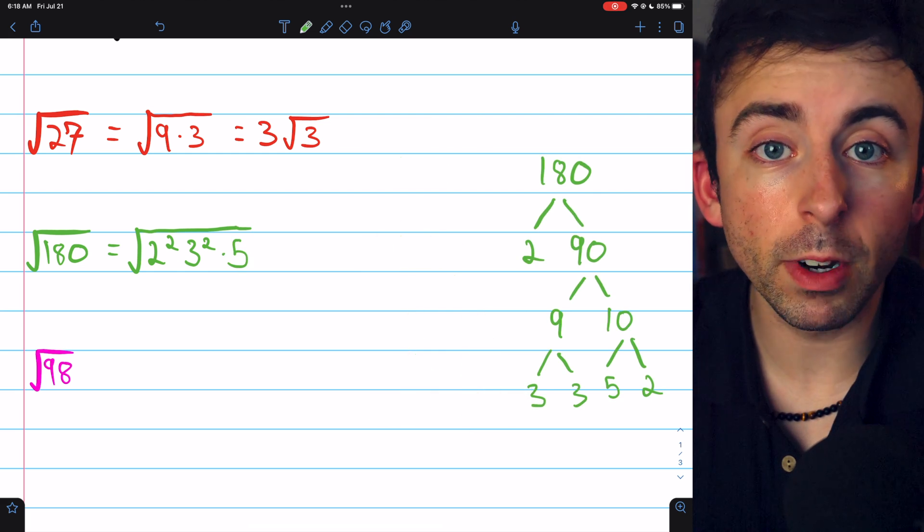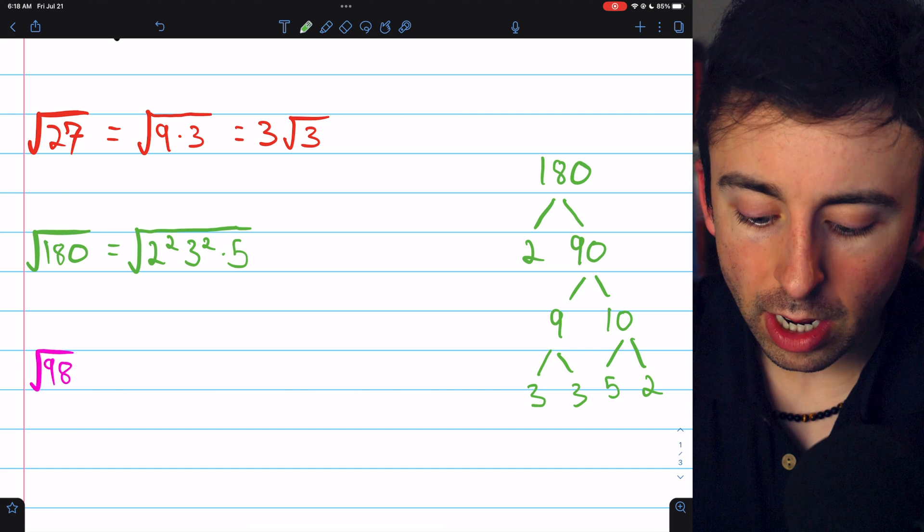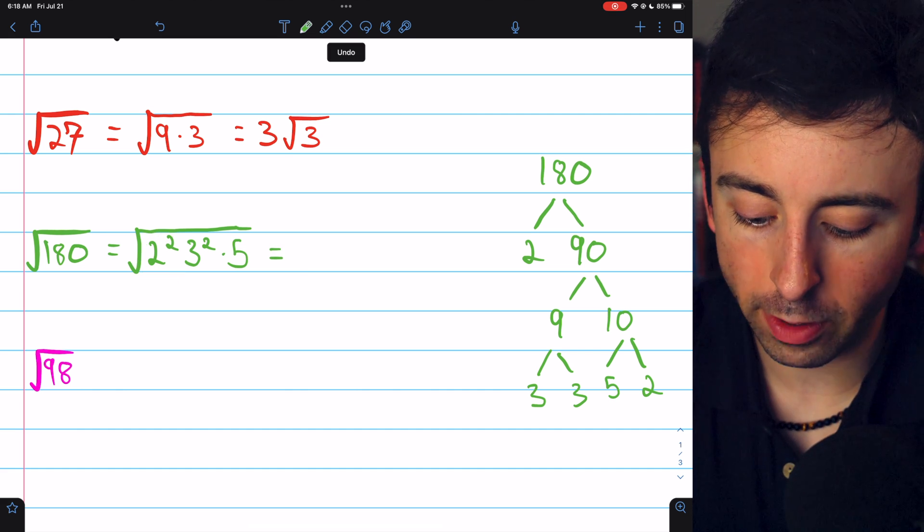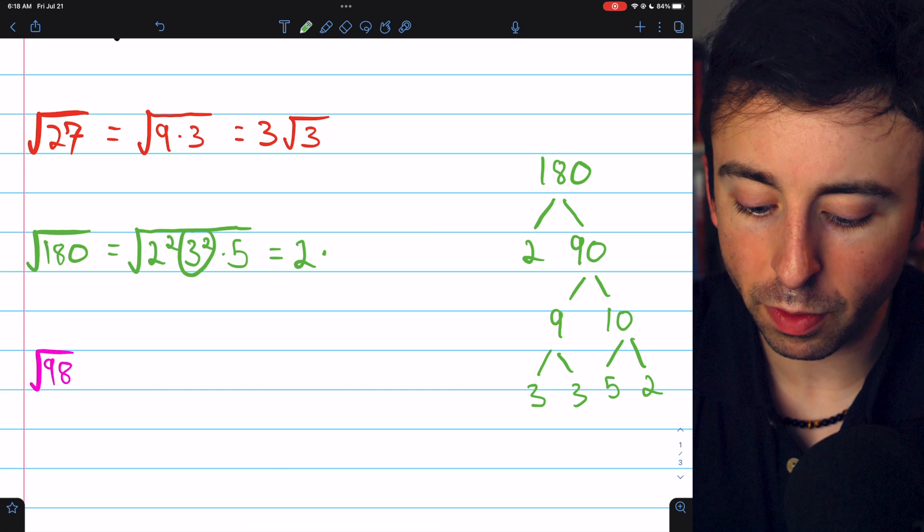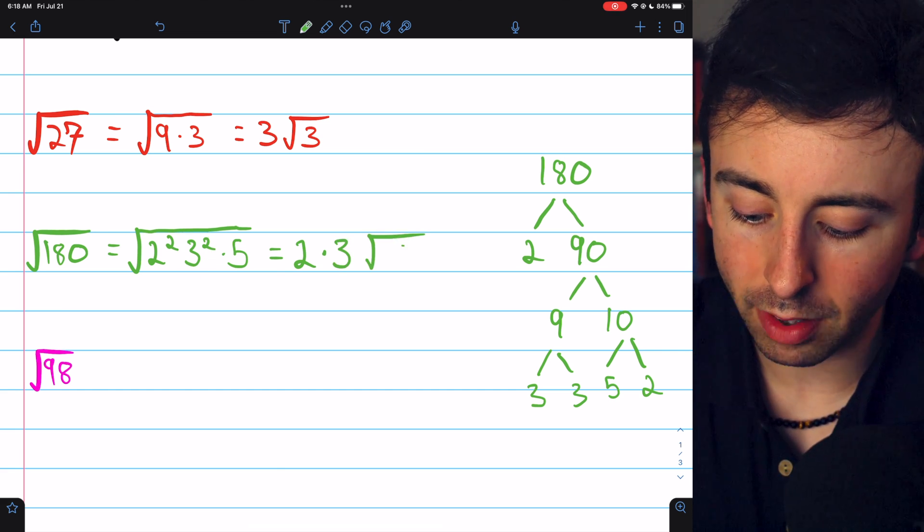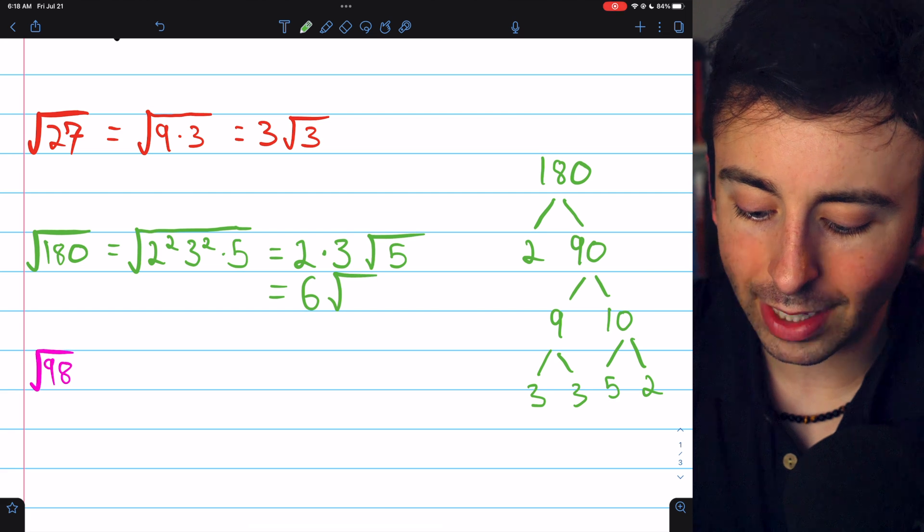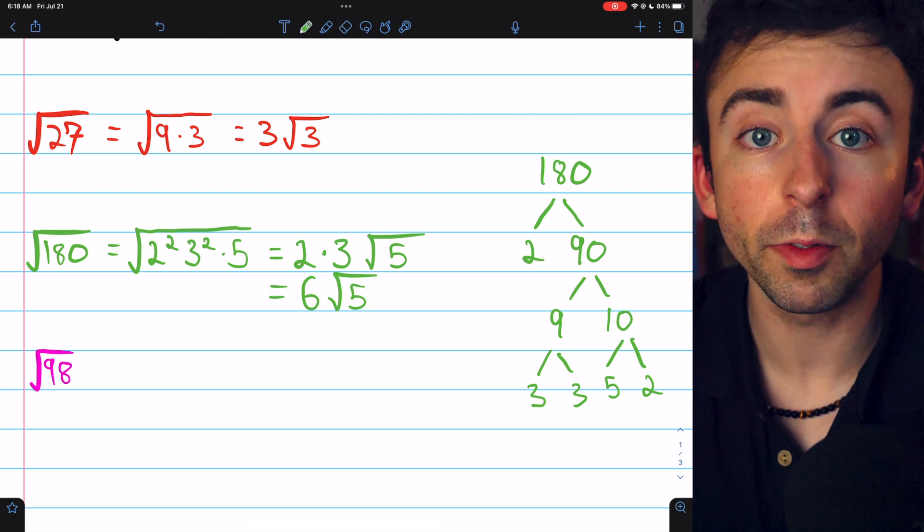Since 2 squared and 3 squared are perfect squares, we can take them out of the square root. The square root of 2 squared is just 2, and the square root of 3 squared is just 3, and then that leaves the square root of 5. 2 times 3 is 6, so our final answer is 6 root 5.